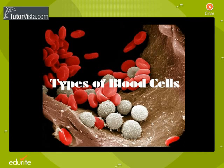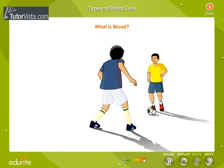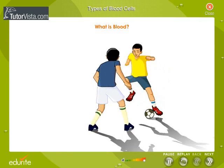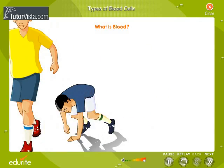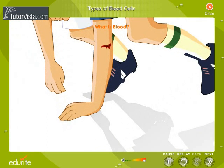Types of blood cells. Everybody is familiar with the sight of blood. It is the red fluid that oozes out of our body when we have sustained a cut or a deep injury. What exactly is blood?